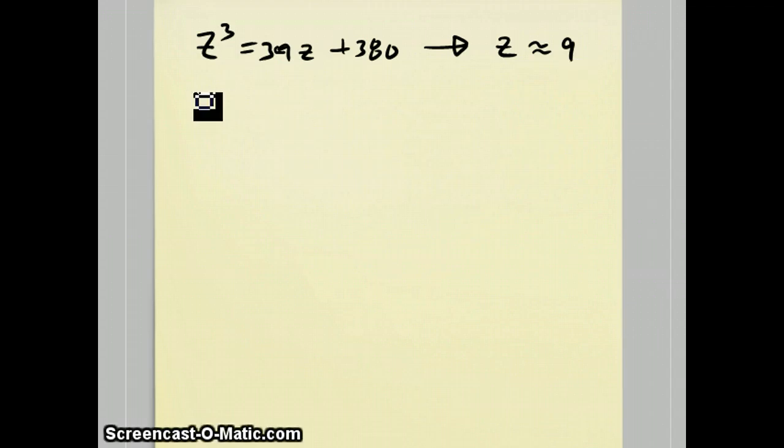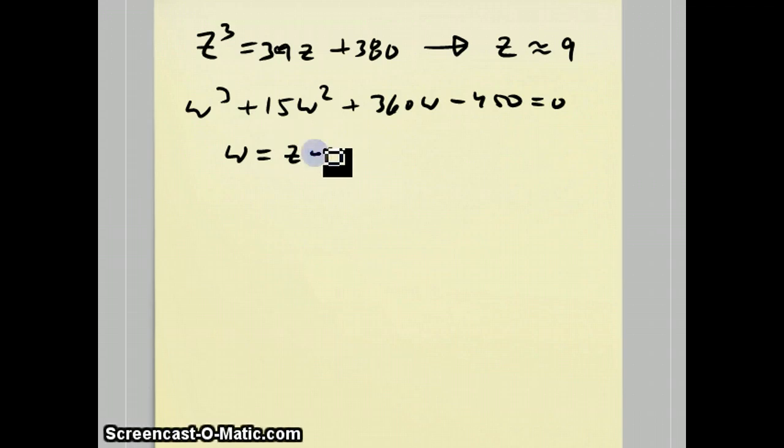Tutorial number 5 and 4, I showed how you could take an equation like w³ + 15w² + 360w - 450 = 0. Do a substitution. In this case, w = z - b/3a, so it was minus 5. And if you plug that into this equation, you would end up with this equation. And with z equals 9, then w is approximately equal to 4.